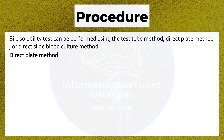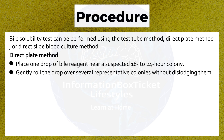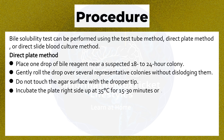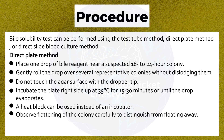Direct Plate Method: Place one drop of bile reagent near a suspected 18- to 24-hour colony and gently roll the drop over several representative colonies without dislodging them. Do not touch the agar surface with the dropper tip. Incubate the plate right side up at 35 degrees Celsius for 15 to 30 minutes, or until the drop evaporates. A heat block can be used instead of an incubator. Observe flattening of the colony carefully to distinguish from floating away.